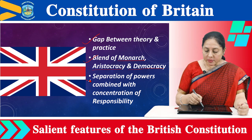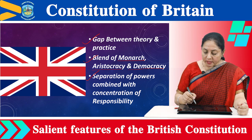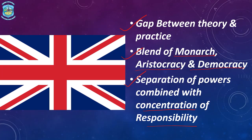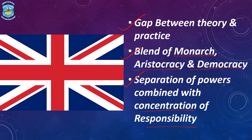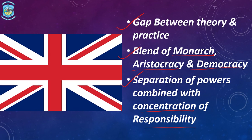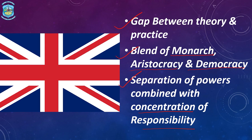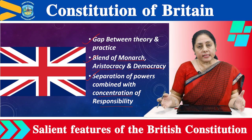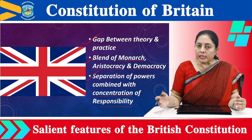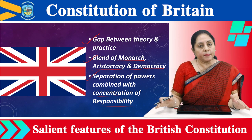The next feature talks about separation of powers combined with concentration of responsibility. The French philosopher Montesquieu gave the theory of separation of powers. When he came to England, he observed three different organs — executive, legislature, and judiciary — all working independently without interfering with each other. The executive consists of the crown, prime minister, and cabinet; parliament consists of the upper and lower houses, House of Lords and House of Commons; and the judiciary comprises the courts.